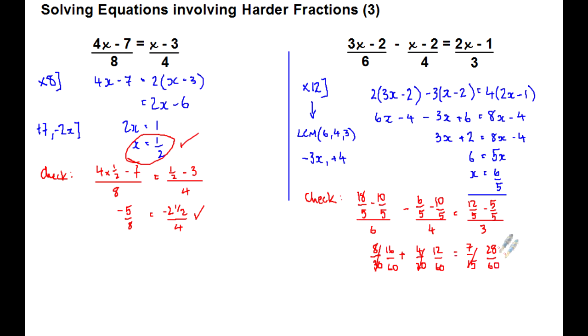And quadruple the 7 and the 15 to give 28 over 60. 16 and 12 is 28, divided by 60, equals 28 divided by 60, left equals right. And so, x is 6 over 5 is the right answer, 6 fifths.